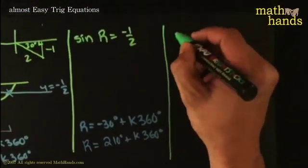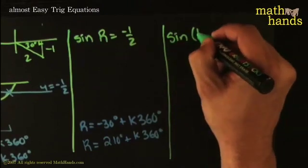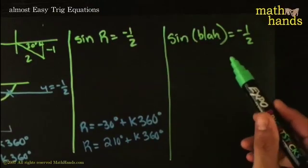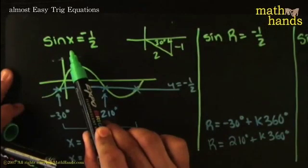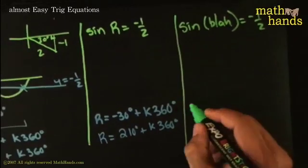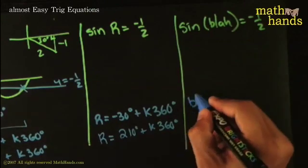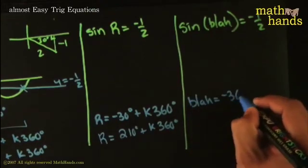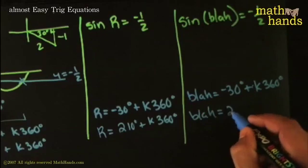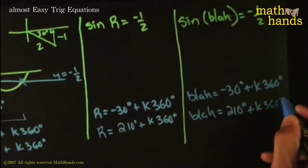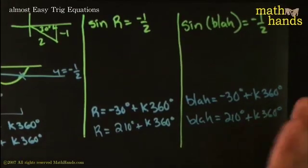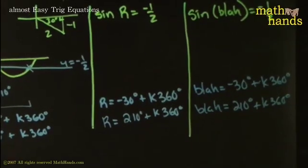Okay, that's a pretty easy game to play. What if I had sine of something else? What if I had sine of blah is equal to negative one half. How would you solve that one? Well exactly the same way. If you can do it for X and you can do it for R, you can do it for anything, blah. So the answer here would be that blah is equal to negative 30 degrees plus multiples of 360 degrees, or blah is equal to 210 degrees plus multiples of 360 degrees. That's the idea.